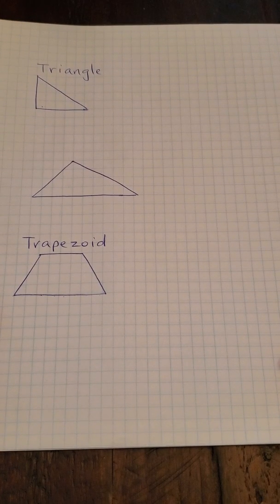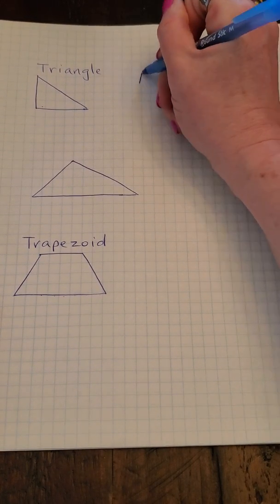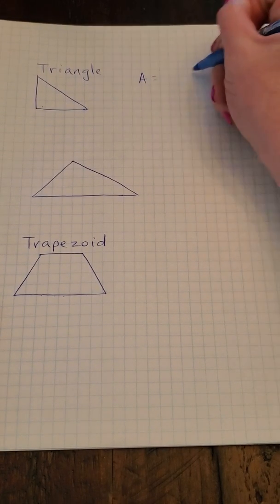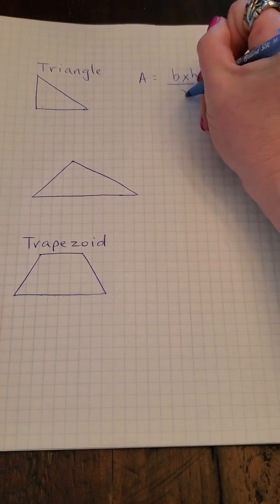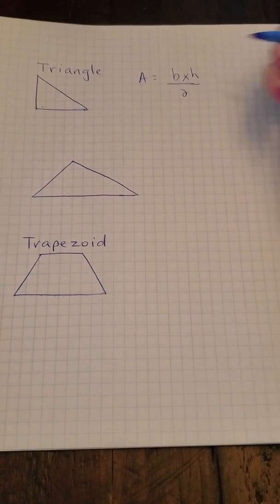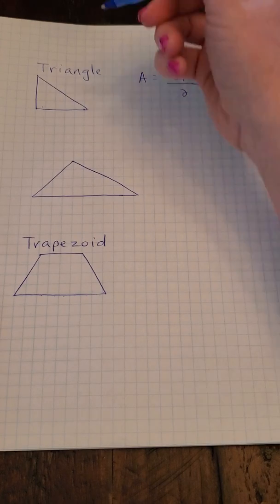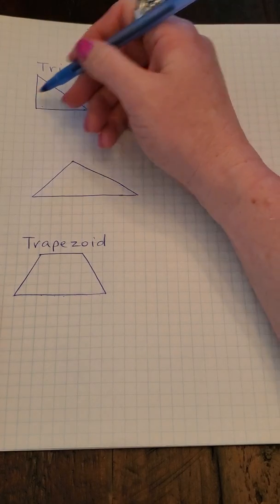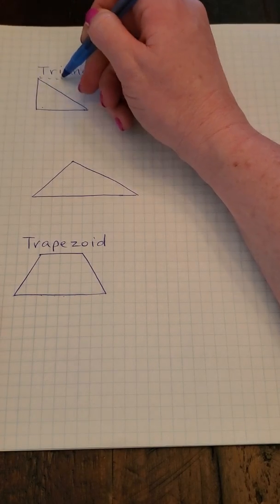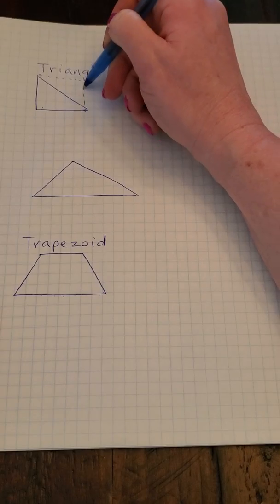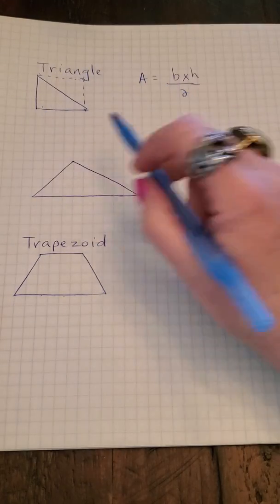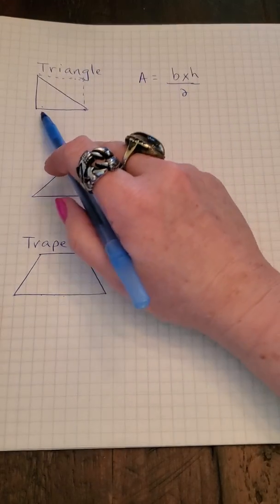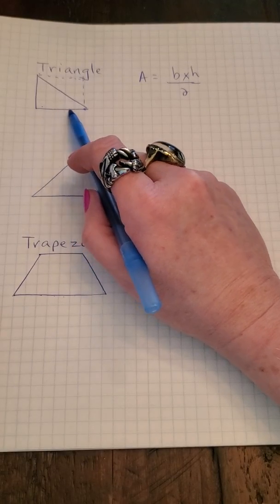We're going to move on to a triangle and a trapezoid. The triangle is very similar — you can still use base times height, but you have to cut it in half. If I drew a dotted line to complete the shape, it looks like a rectangle. Counting: one, two, three, four, five on the bottom.